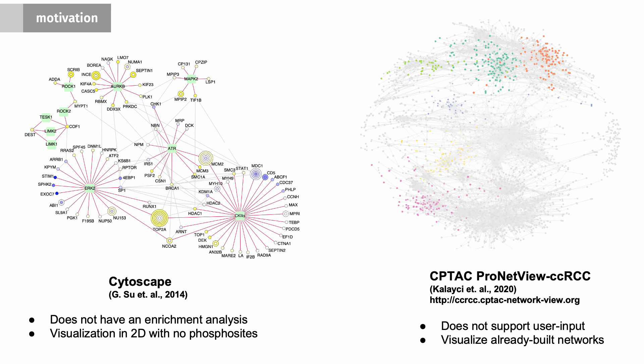In addition, when we go to literature, there are tools that represent networks. For example, the most famous one being Cytoscape. However, it does not have an enrichment analysis component. And also the visualizations are in two dimensions. Furthermore, there is no information on phosphosites that we can add here. At the same time, we have developed a ProNetView CCRCC website previously for the CPTAC consortium. However, this does not support user input and it only visualizes already built-in networks.